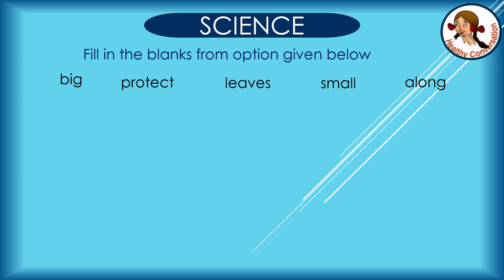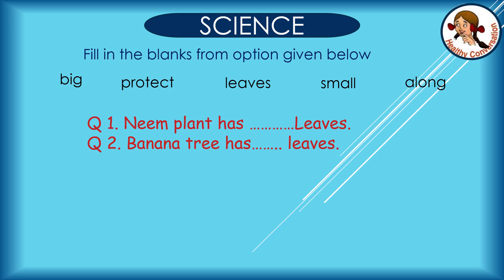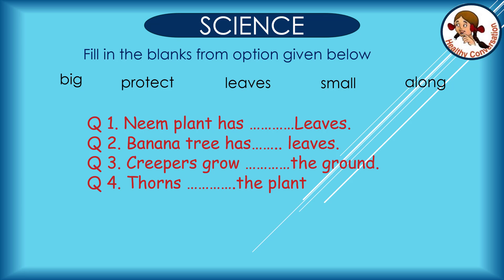Fill in the blanks from the options given below. Options: big, protect, leaves, small, along. Question 1: Neem plant has dash leaves. Question 2: Banana tree has dash leaves. Question 3: Creepers grow dash the ground. Question 4: Thorns dash the plants. Question 5: Dash make food for plants.